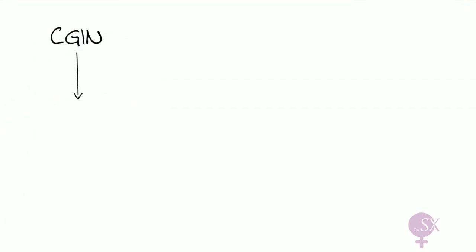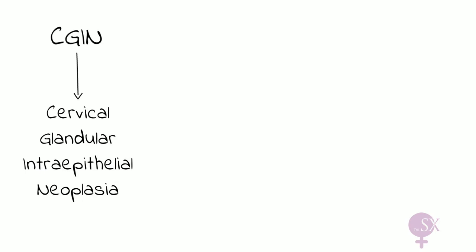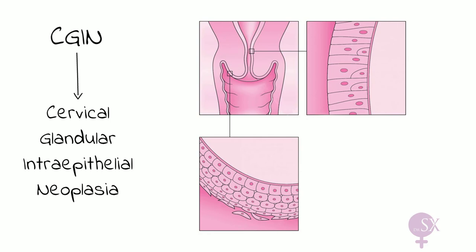A side note on CIGEN: this is cervical glandular intraepithelial neoplasia, identified from a smear test. In the cervix we have two types of cells — squamous cells lining the ectocervix, and glandular columnar cells present in the endocervix. Both can be abnormal, resulting in CIGEN. When abnormal columnar cells are present, this may point towards an endometrial abnormality, since this epithelium is continuous with the endometrium.